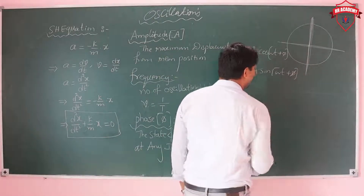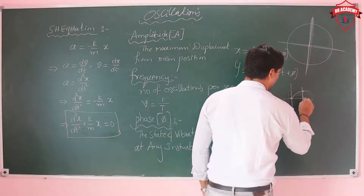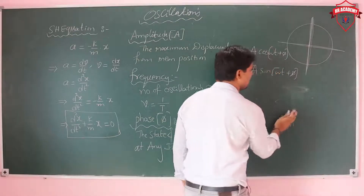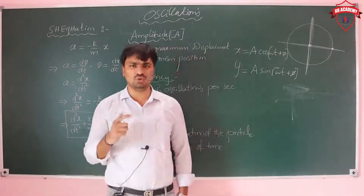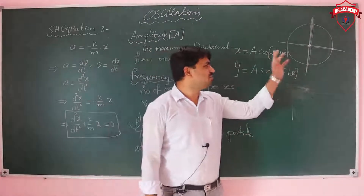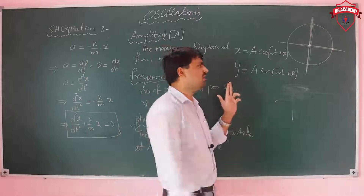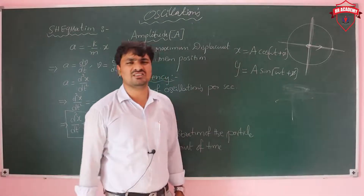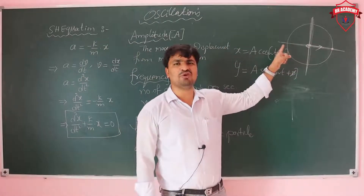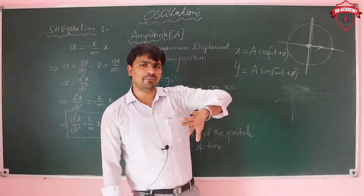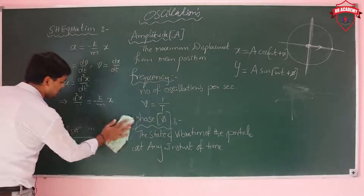Phase can be treated like an angle. From mean to extreme is pi/2; from mean to extreme and back to mean is pi; from mean to opposite extreme is 3*pi/2 or -pi/2. So phase represents the state of the oscillating particle at any given instant.